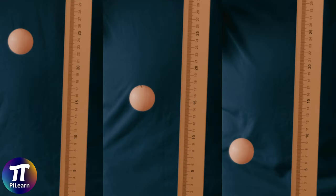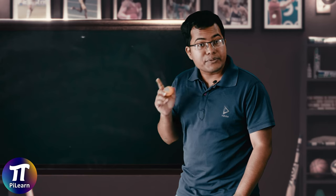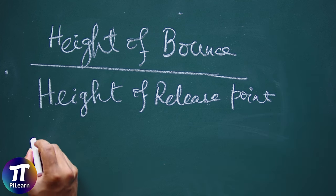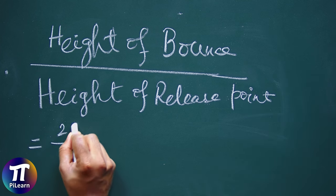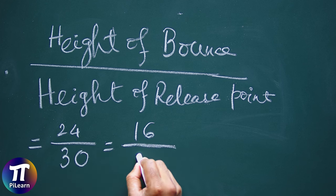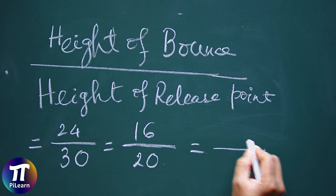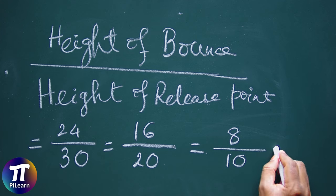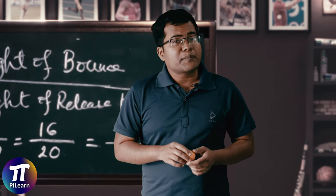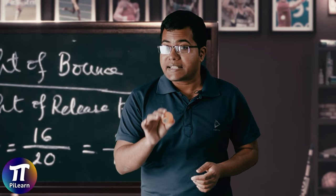In the first case the ball bounced back to roughly 24 centimeter. In the second and third cases it bounced back to roughly 16 centimeter and 8 centimeter respectively. You see the pattern right? The ratio of the height of the bounce to the height of the release point is 24/30 = 16/20 = 8/10 = 0.8. Isn't it amazing that this ball somehow manages to jump with the same ratio at any height.